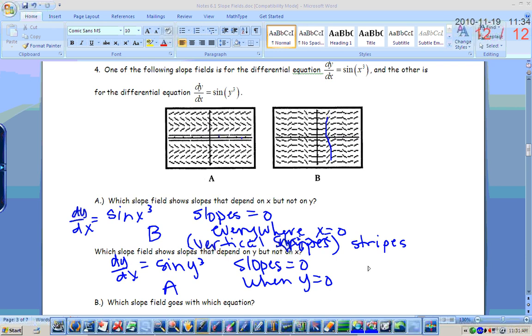So you're going to have horizontal stripes. So which slope field goes with which equation? The sine x cubed was B, and the sine y cubed was A.